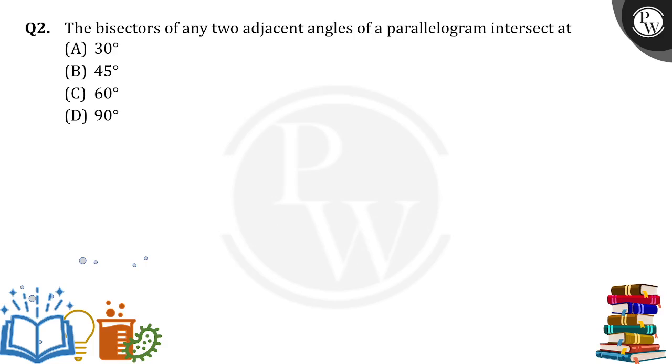Hello everyone, the bisectors of any two adjacent angles of a parallelogram intersect at what point? Let's see here.